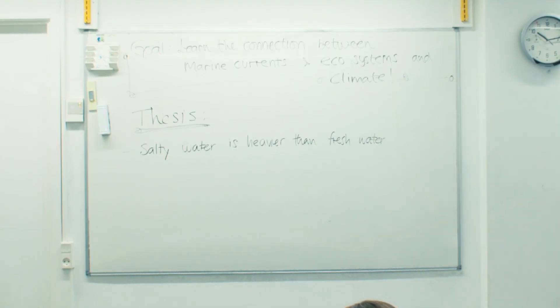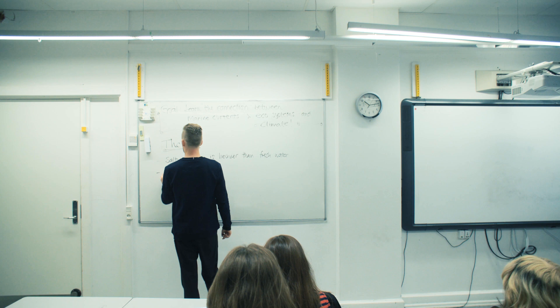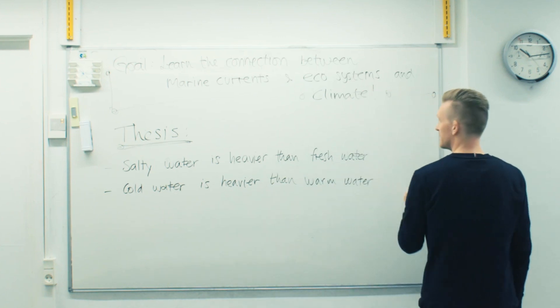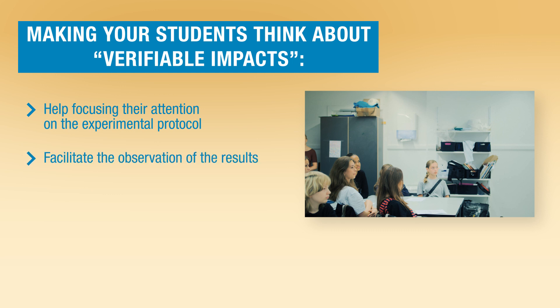What should happen when we put salty water into fresh water? It would sink. And what would happen to cold water if we color that — what would happen if we put it into a warm basin? It would sink too. Before the students conduct their experiments, it is important to make sure they will look at the relevant results. By asking them to think about their expectations, the teacher checks if they've understood what they will observe. This is called verifiable impact, and it will help focus students' attention and facilitate observation of results.